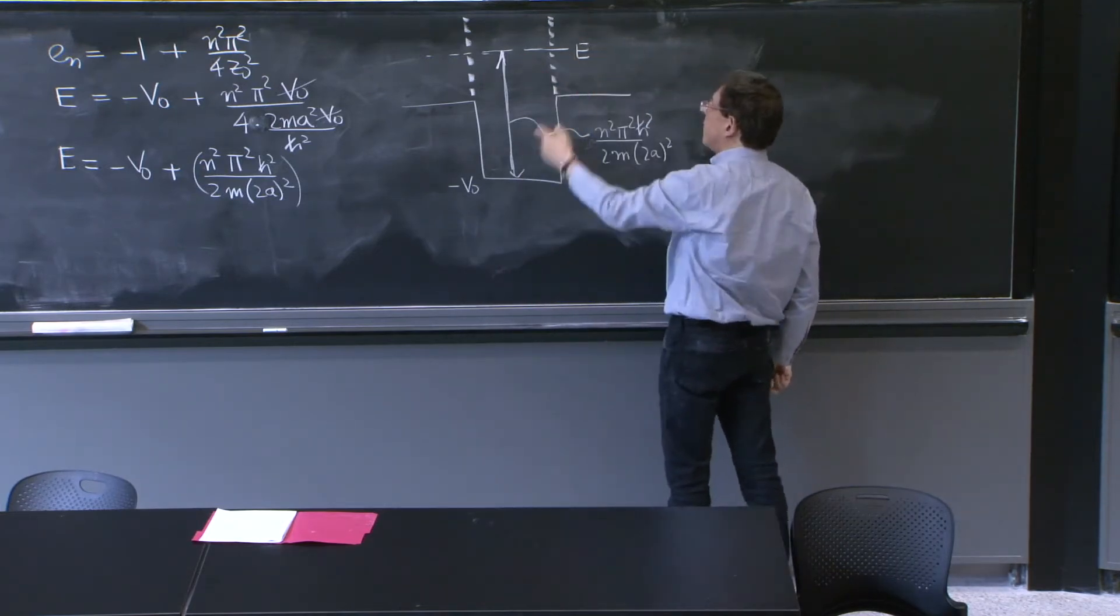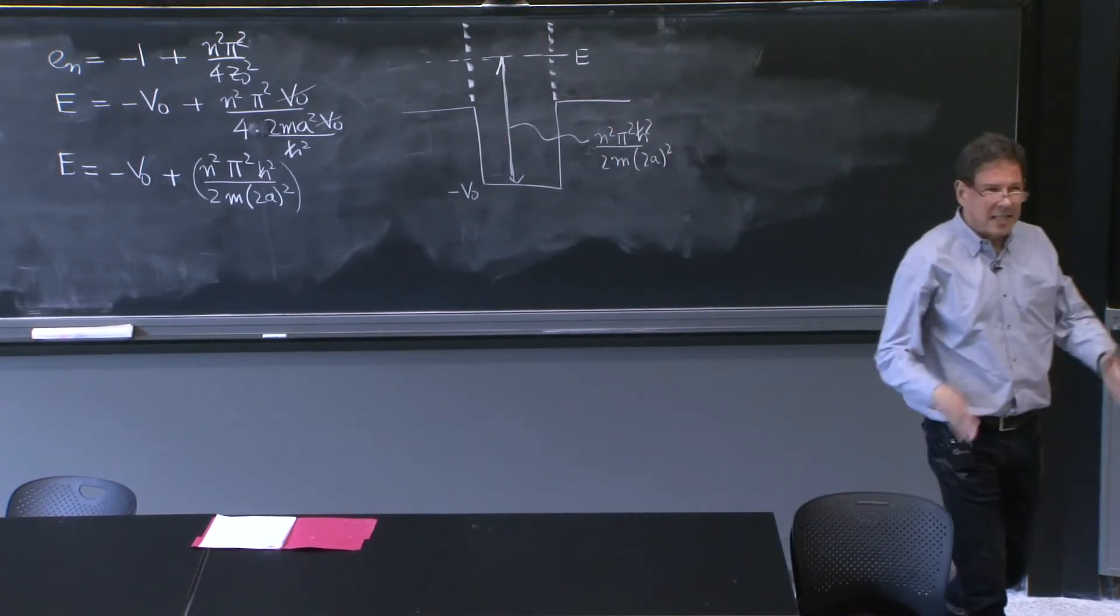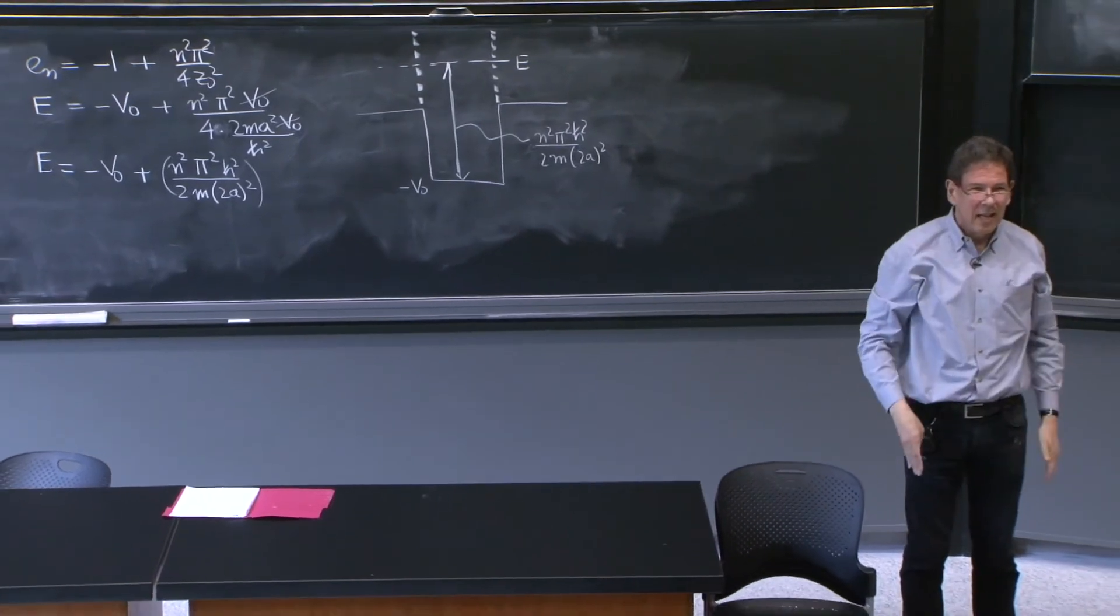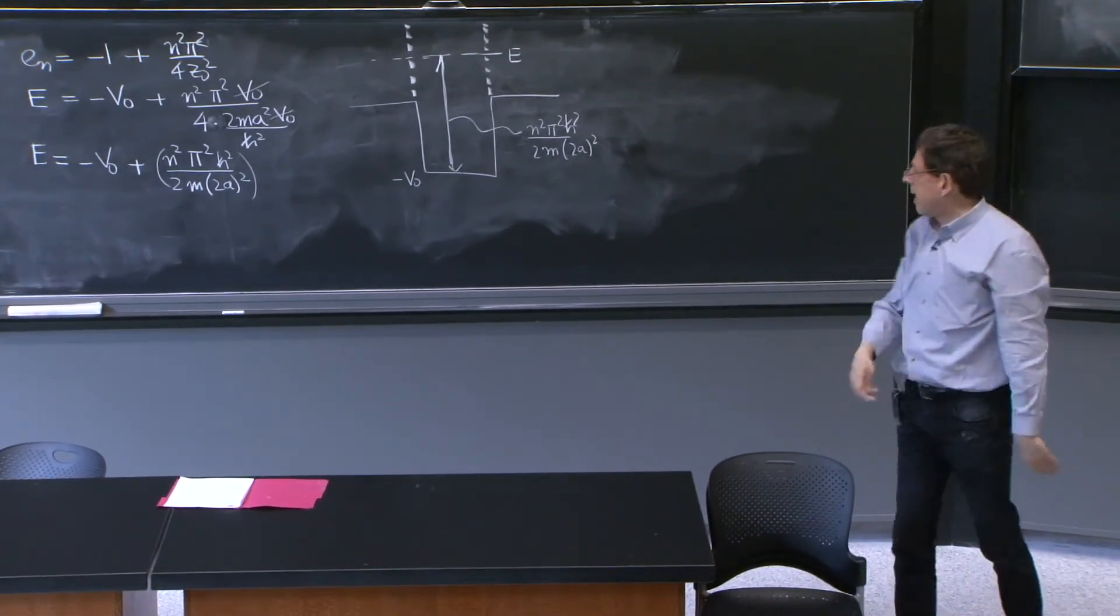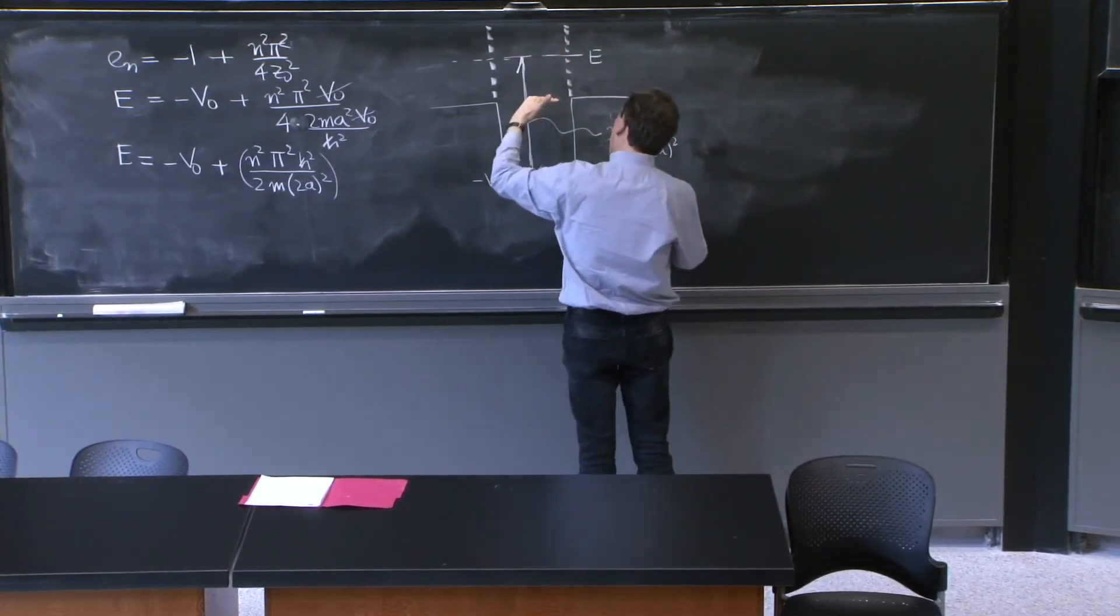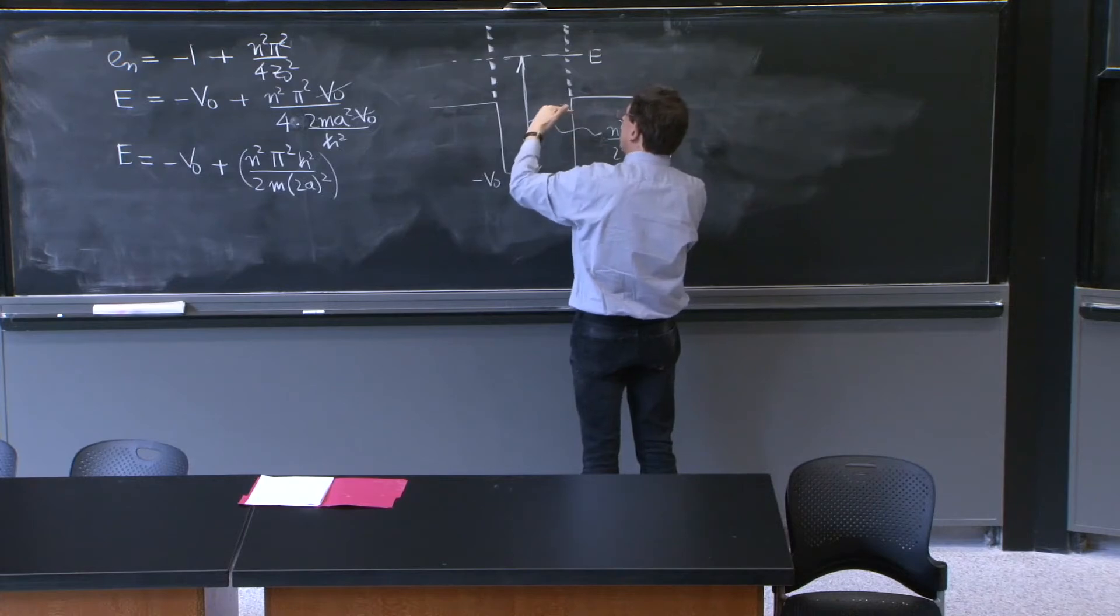are those in which the energy e coincides with some hypothetical energy of the infinite square well that you would put here. It is as if you would have put an infinite square well in the middle, and look at where are the energies of bound states that are bigger than zero,